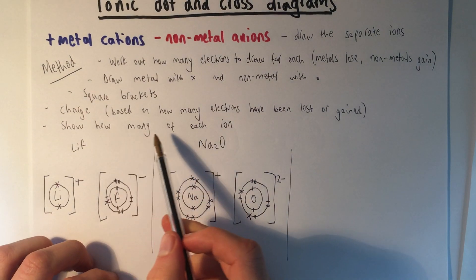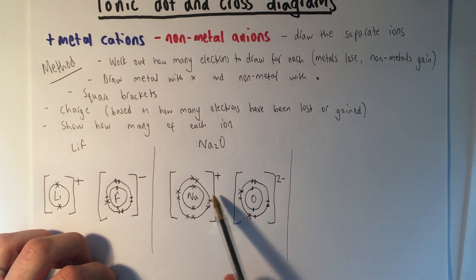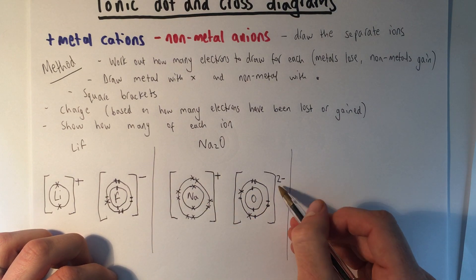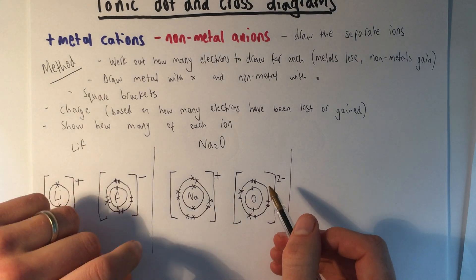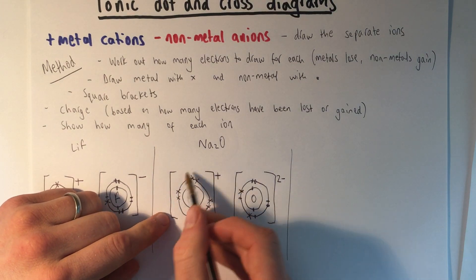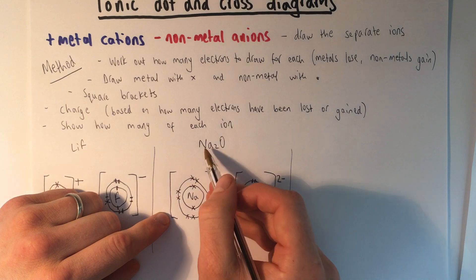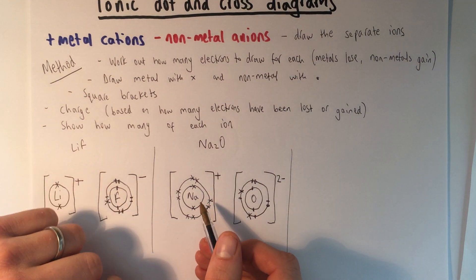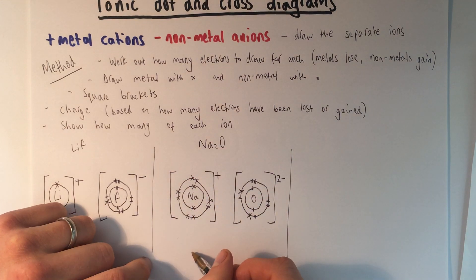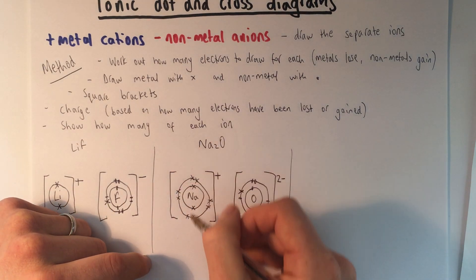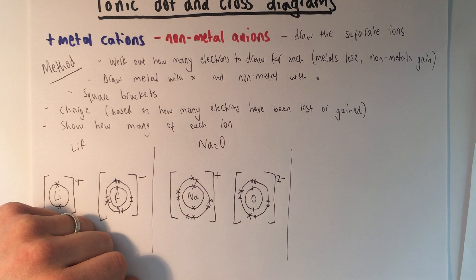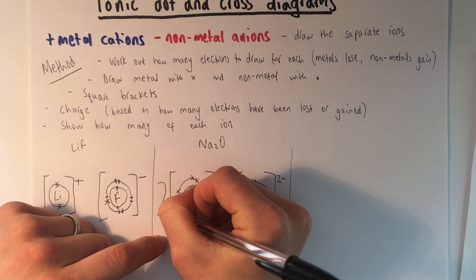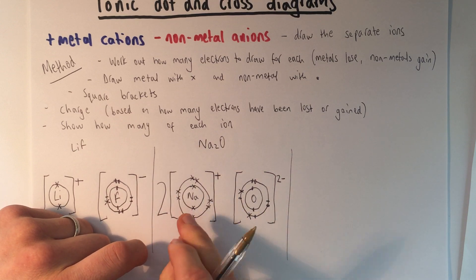Now, the last thing is to show how many of each ion. For the charge to be balanced, we have one plus ions and two minus ions, so we need two sodium ions to balance out one oxide ion — and that's what the formula Na₂O shows. The best way would be to draw another sodium ion, showing two sodium ions and one oxide ion. To make it quicker, I'm just going to put a big two in front of the sodium ion to indicate there are two of those.